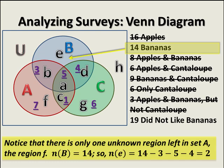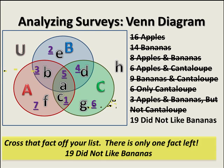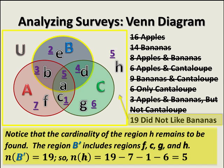Now, 14 students like bananas — that covers regions a, b, d, and e. We know three of those, so region e equals 14 minus 3, minus 5, minus 4, which is 2 — students who like only bananas. Finally, 19 did not like bananas, which is B-complement, covering regions c, f, g, and h. We know c=1, f=7, g=6, so region H equals 19 minus 7, minus 1, minus 6, which is 5.